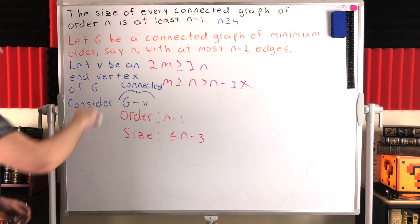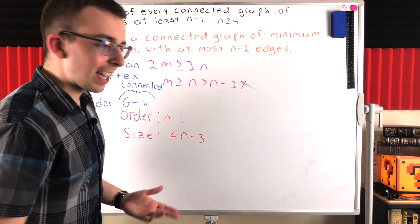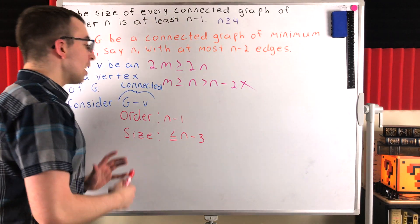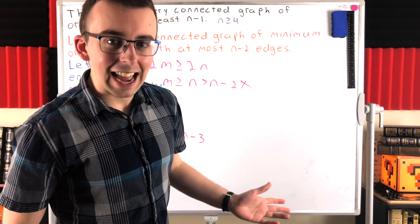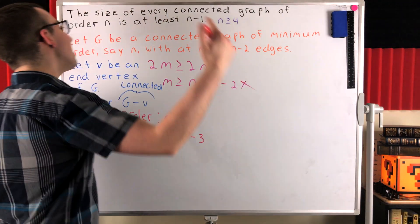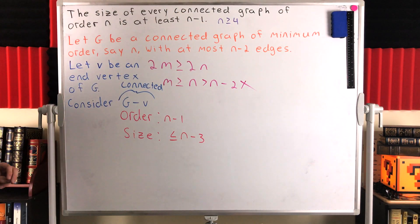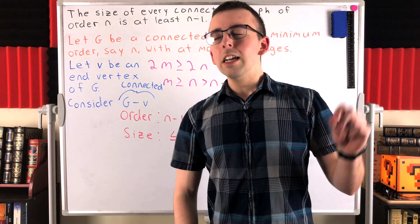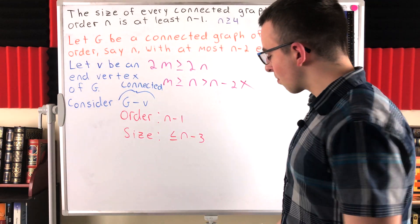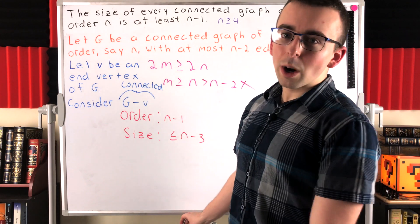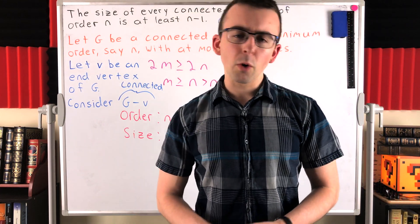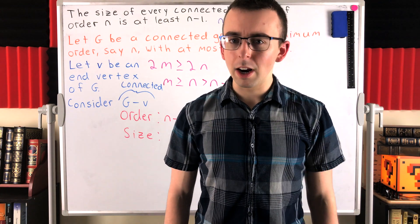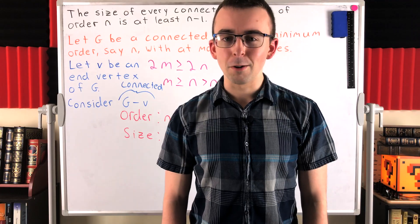So g minus v is a counterexample with fewer vertices than what we assumed was our counterexample of minimum order. That's a contradiction — if g is a counterexample of minimum order, you can't find a counterexample with lesser order, but we did. So there cannot exist any counterexamples at all, and our claim holds: the size of every connected graph of order n is at least n minus 1. I hope this video helped you understand the proof. Let me know in the comments if you have any questions or video requests. Thank you very much for watching — I will see you next time, and be sure to subscribe for the swankiest math lessons on the internet.